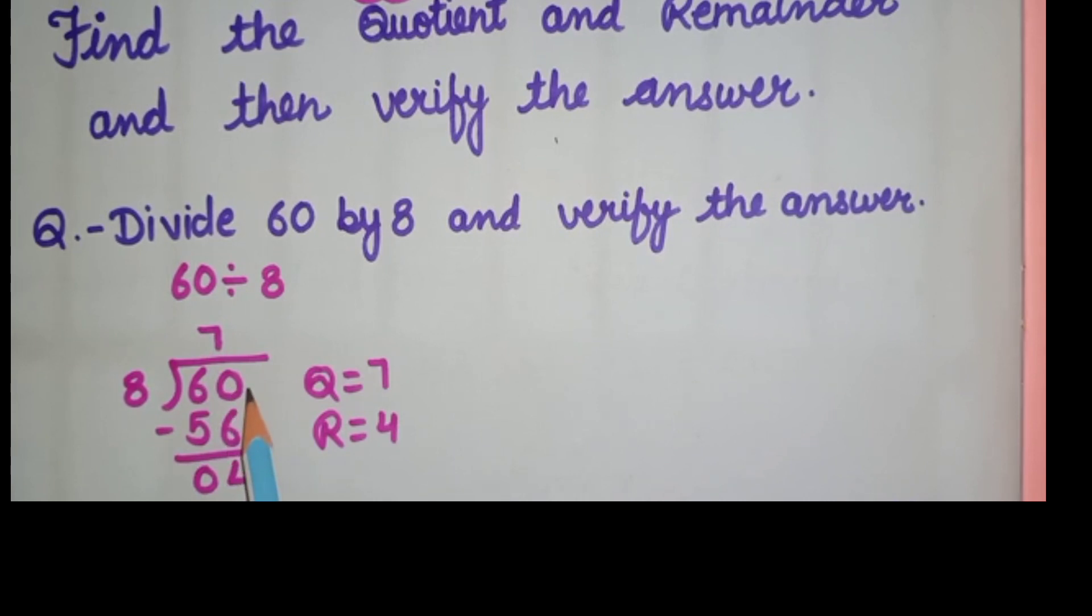No digit is left in the dividend, so remainder is 4. And remainder should be less than divisor. Remainder is 4 and the quotient is 7.